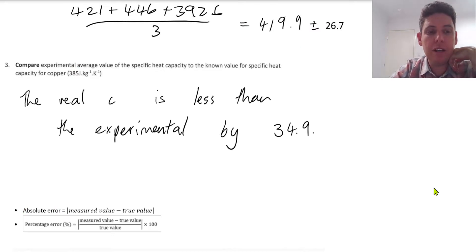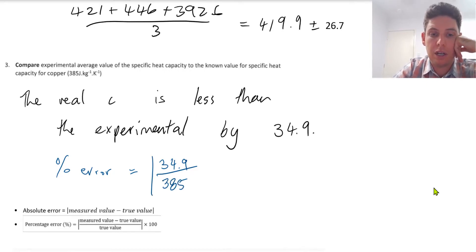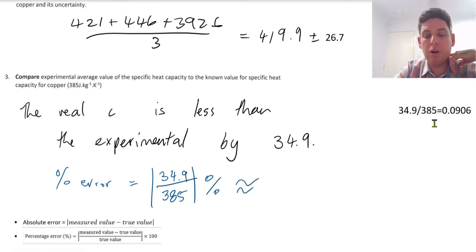So we've calculated the absolute error. In this question, because we're comparing the two, we would also want to do the percentage error. Equals what we just calculated, measured minus true, divided by the true value. And both of these have these lines, which mean absolute. So if it was negative, it would become positive. So on the calculator, you get approximately 9.1%.